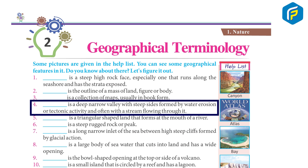Canyon is a deep, narrow valley with steep sides formed by water erosion or tectonic activity, and often with a stream flowing through it.